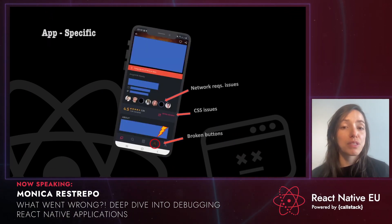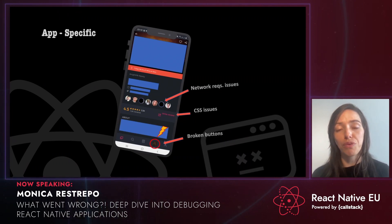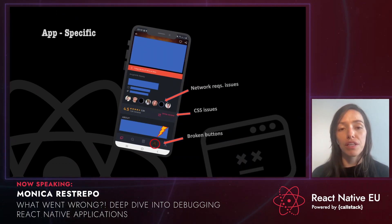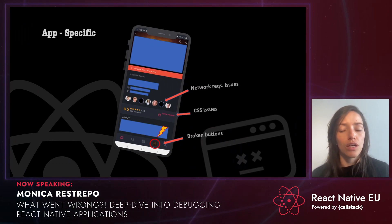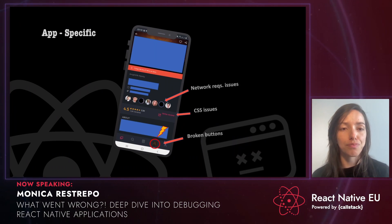App-specific bugs are the type of bugs we find most often within our apps. They are mostly usability and UI bugs. Network request issues are part of them, CSS issues and broken bugs, for instance.